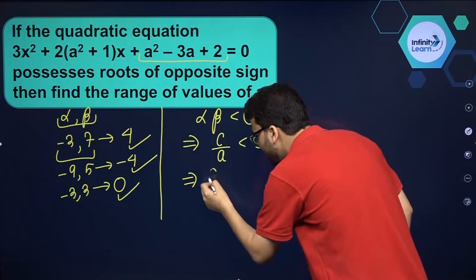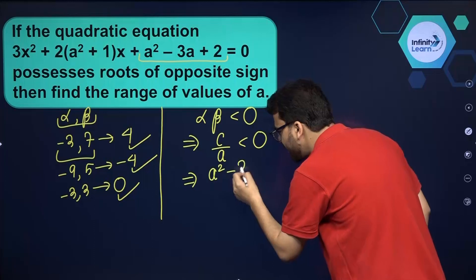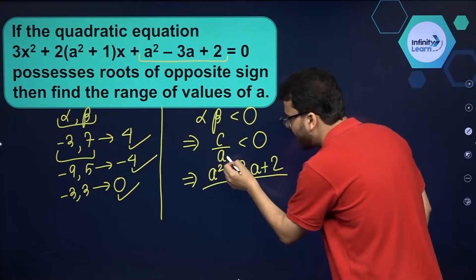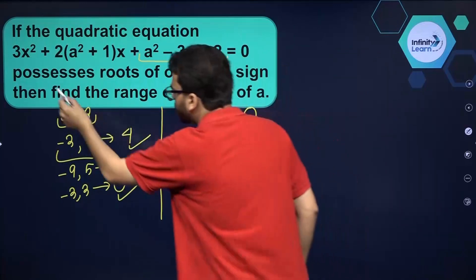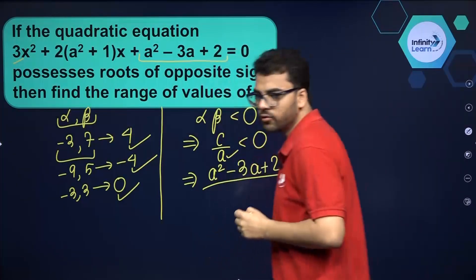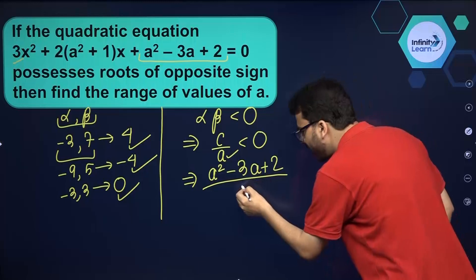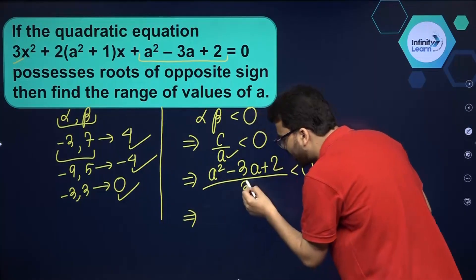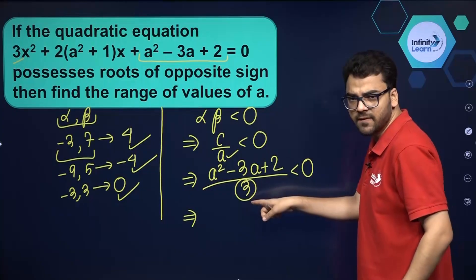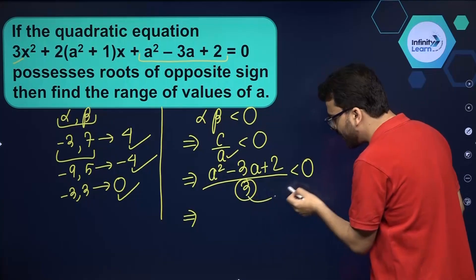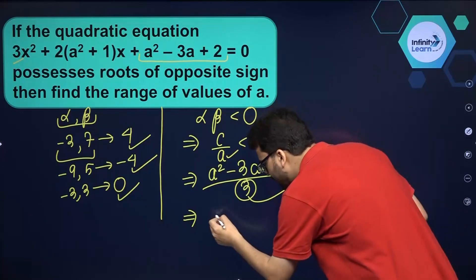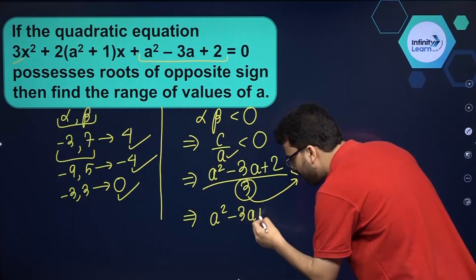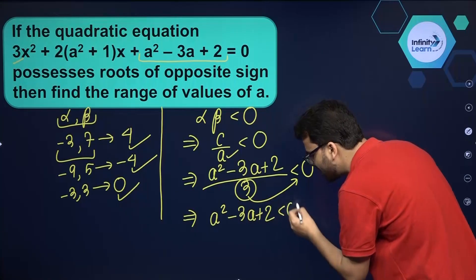Now, what is c in this case? c is the constant term, and you see that is a squared minus 3a plus 2. And what is a here? a is the coefficient of x squared, and you see that is equal to 3. So divided by 3 it is less than 0. You can multiply 3 on the other side — it's a positive number, so there is no problem with the inequality. Therefore we get a squared minus 3a plus 2 less than 0.